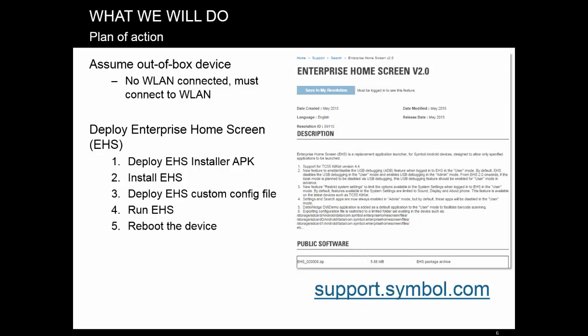Step 1: Download the EHS installer APK file for MDM deployment. Note that EHS also has a version for manual deployment — that one will not work, since it requires user interaction. Step 2: Install EHS from that APK. Step 3: Deploy the EHS config file. Step 4: Run EHS on the device so it picks up and processes the configuration.